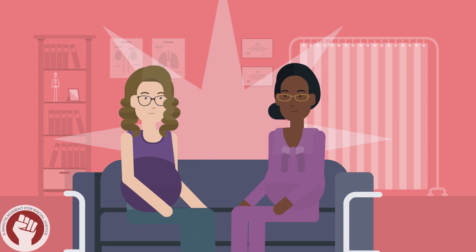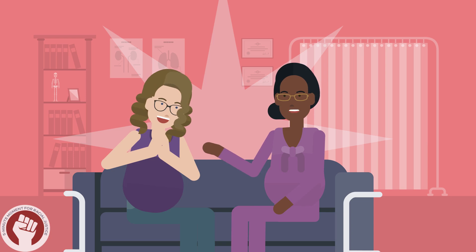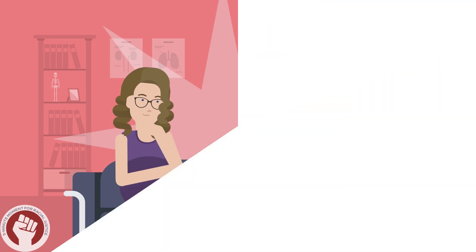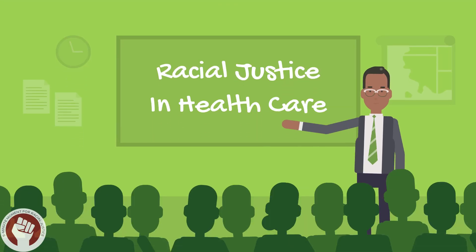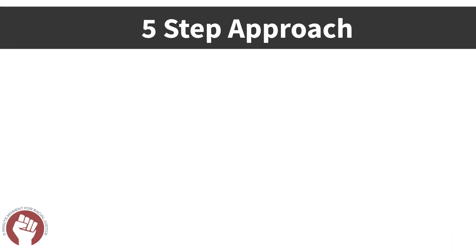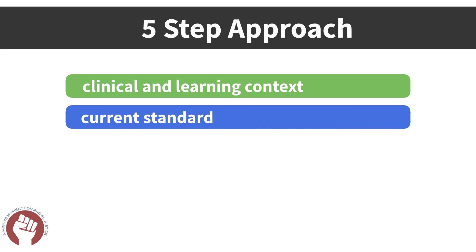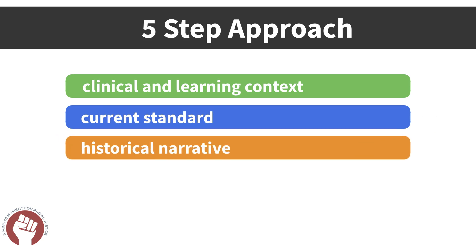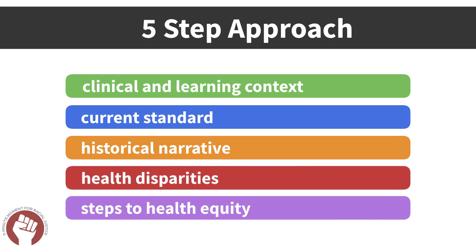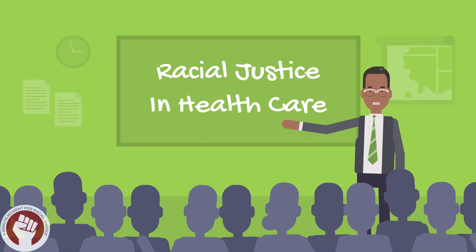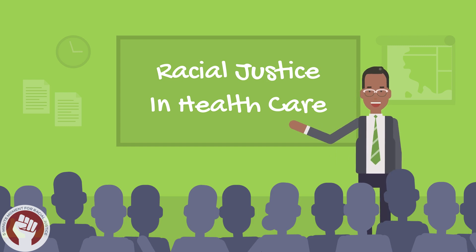This video covers the topics of implicit bias and racial health disparities in maternal health, as guided by the 5-Minute Moment for Racial Justice Teaching Framework. The 5-Minute Moment for Racial Justice is a teaching framework to promote health equity and racial justice in medical education. The framework relies on a five-step approach that discusses the learning and clinical context, the current standard around a medical diagnostic or treatment, the historical roots and bias of that standard, contributions to health disparities, and steps to take to practice more equitably. This framework offers educators a structured way to talk about this topic in a concise manner across commonly encountered clinical scenarios.